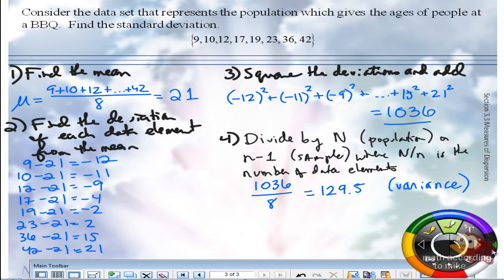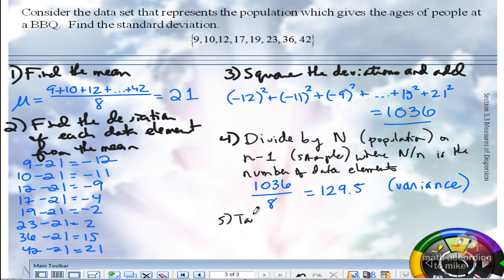Step five. Take the square root. So we're going to take the square root of 129.5. Now we're definitely going to get an ugly number here. So let's round to two decimal places. I got 11.38. And the unit is the same as the unit for the mean, which is the same as the unit for the data itself. So that's years.